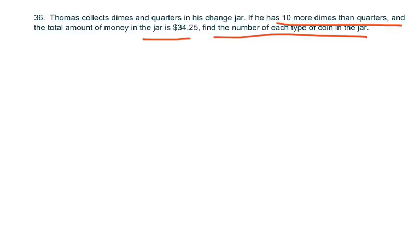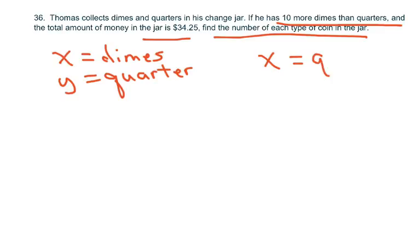Now you can let, just call it d and q. I'm just going to let x equal the dimes. You don't have to. You can let d equal the dimes and y equal the quarters. You can do it any way you want. I'm going to set up a system of equations. So he has 10 more dimes than quarters. So his dimes is 10 more than the quarters. My quarters is y.